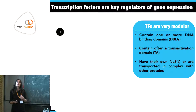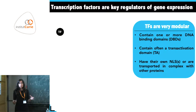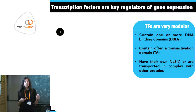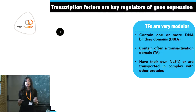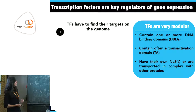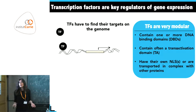Most transcription factors contain sequences that allow them to enter the compartment where transcription occurs — the nucleus. They have so-called nuclear localization sequences and also nuclear export sequences that regulate the balance of their final localization.